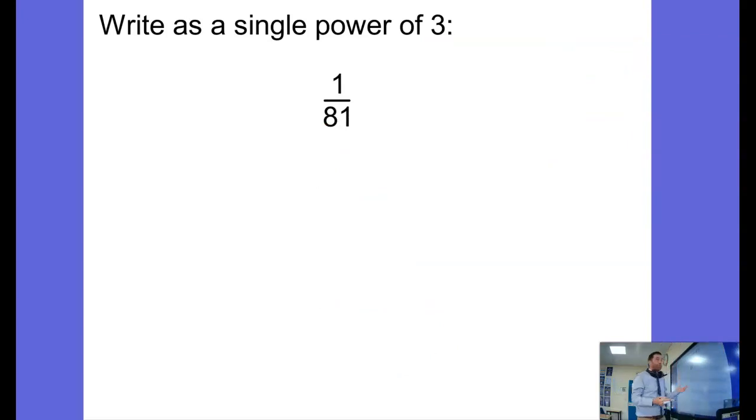Another example there, 1 over 81. Well we've just seen 3 to the power of 4 is 81. So this is the same as 1 over 3 to the power of 4. So to write that as a single power of 3 we can say that is the same as 3 to the power of negative 4. 1 over 81, 3 to the power of negative 4. That's negative indices. Pretty much all there is to it.